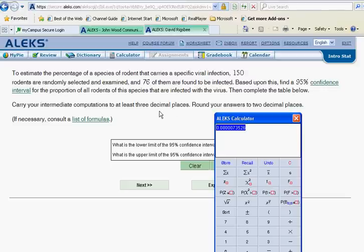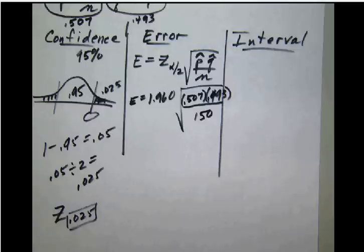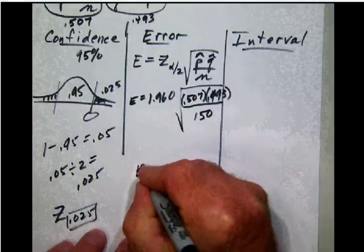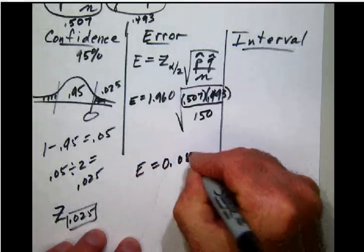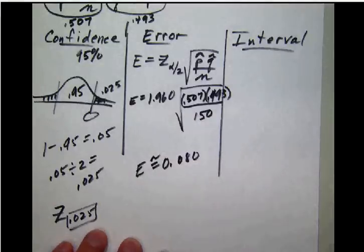And our answer turns out to be 0.0800 and some other decimals. Now notice here that we're going to carry our intermediate computations to three places. So 080. The next digits is 0. So 080 is going to be our error to three decimal places. And so we'll be good at those three places.